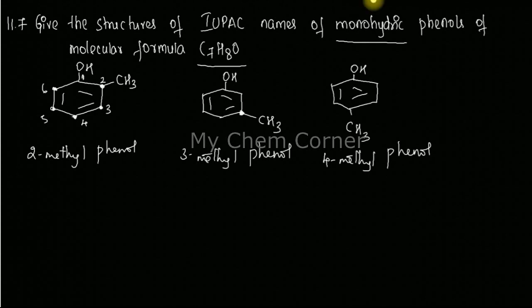Now, if you're looking at the positions on the benzene ring with respect to the OH group, this can also be called ortho-methyl phenol, meta-methyl phenol, and para-methyl phenol. This way you can name them, provided you know how to draw the formula correctly.